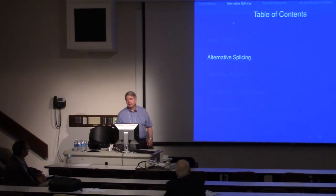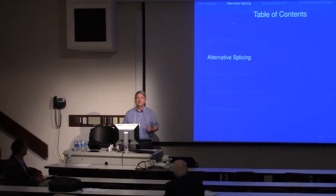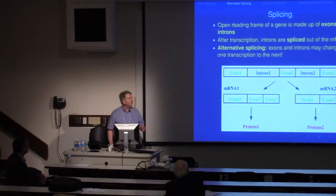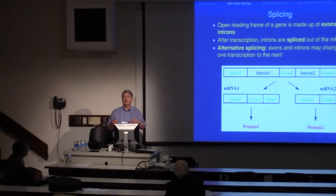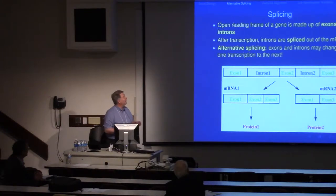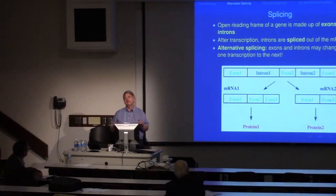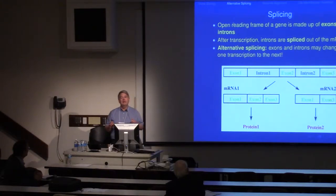The first topic I want to talk about is alternative splicing. What is splicing? In higher organisms, the gene has a certain structure — it has exons and introns. The exons are the portions of the open reading frame that are retained, and the introns are the parts that are spliced out. It turns out that this picture is not definite — there are alternative ways of splicing the same open reading frame, and you can get different products.